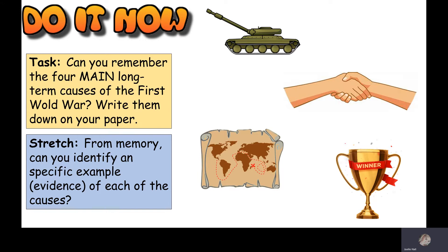Hi, it's Miss Hall here and this is the first revision lesson for the Conflict and Tension World War I GCSE module. Today we're going to be going right back to the beginning and we are going to be looking at the four main long-term causes of the First World War. By the end of this lesson you should be able to identify what the four main long-term causes are, explain how they led to the war, and give specific evidence for each one including dates, individuals, place names, and the names of events.